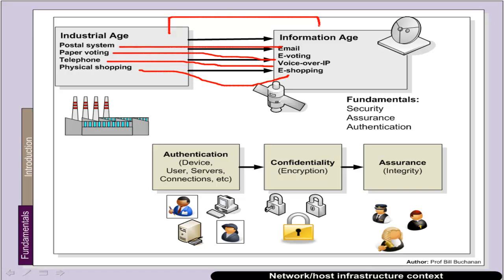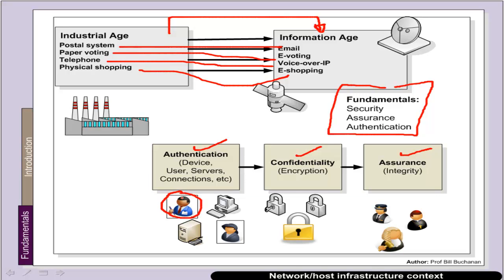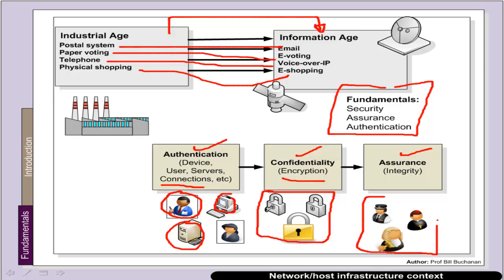For us to be able to move correctly from an industrial age into an information age, there are three basic fundamentals that we need: confidentiality, authentication, and assurance. With authentication we aim to properly authenticate users, devices, and servers, and also even network connections. With confidentiality we typically want data that is either stored or transmitted to be kept confidential, and this typically involves encryption. And then we want to make sure that the data has some assurance so that we know it has not been changed.